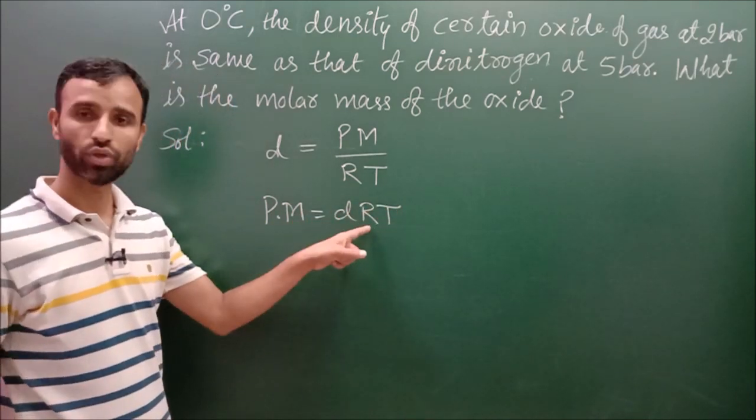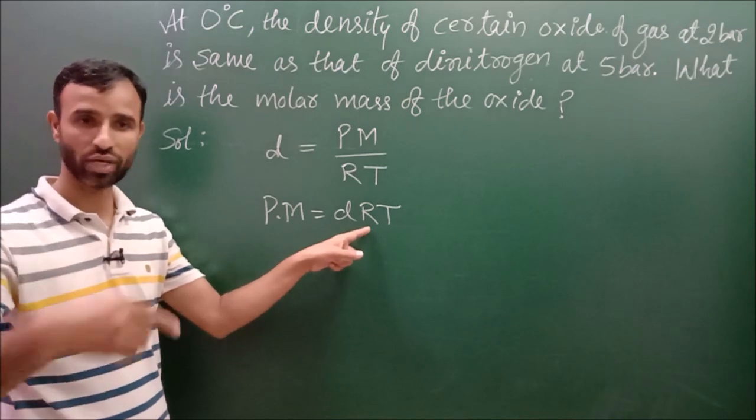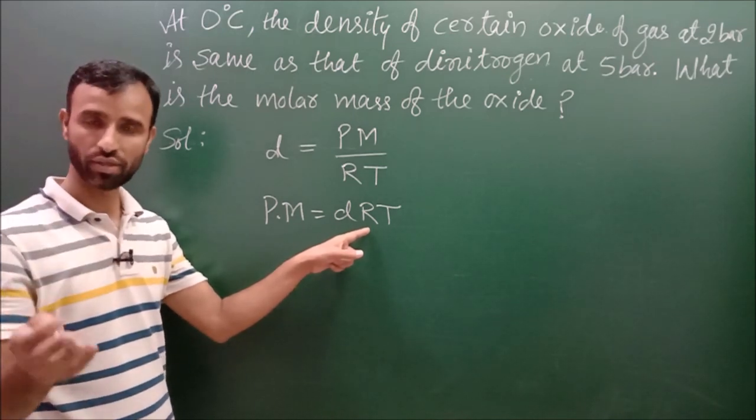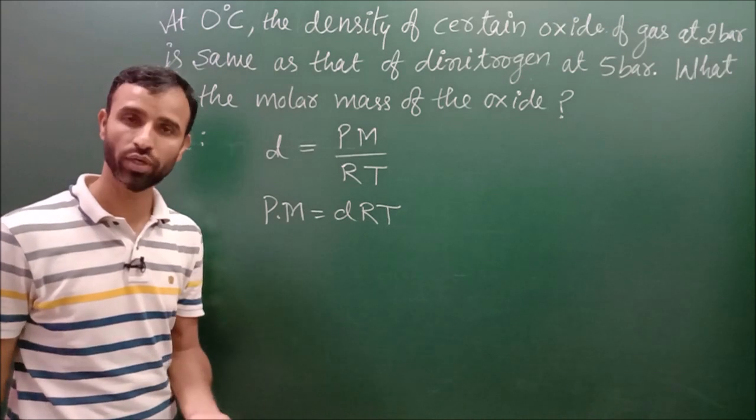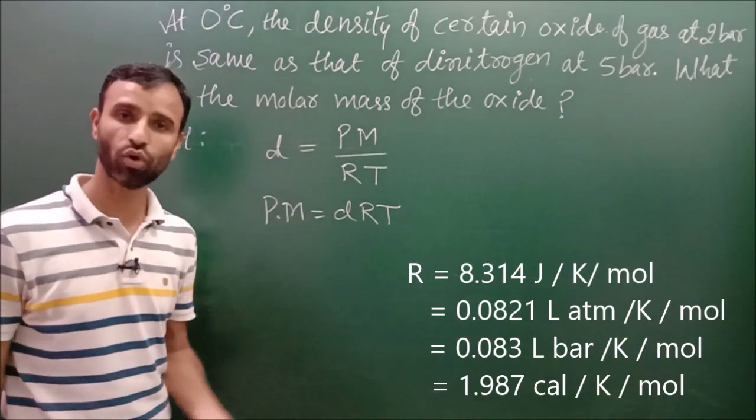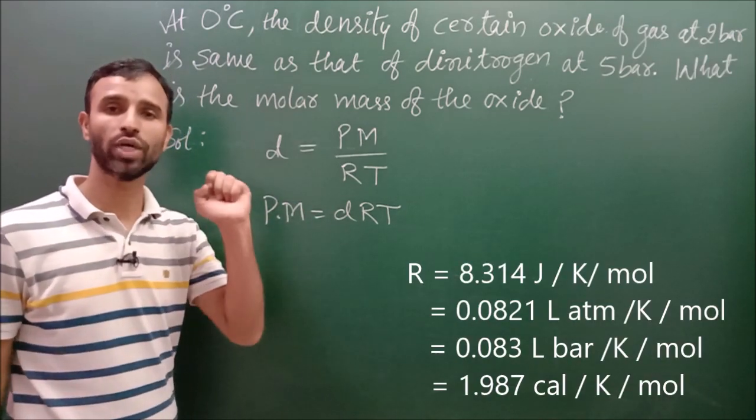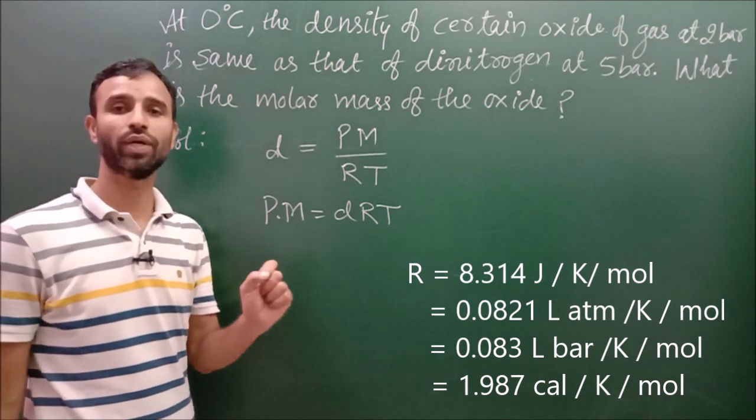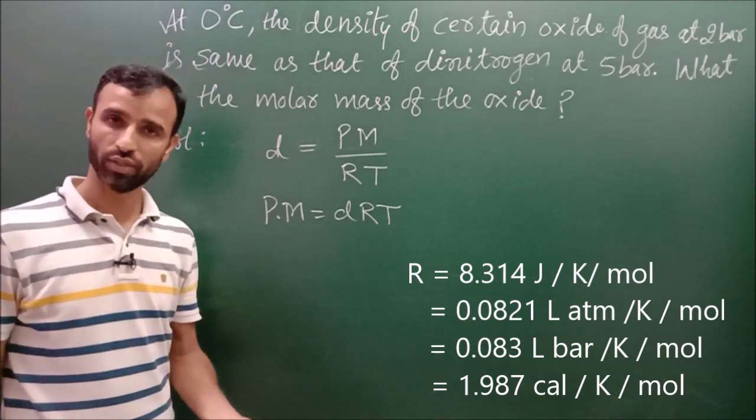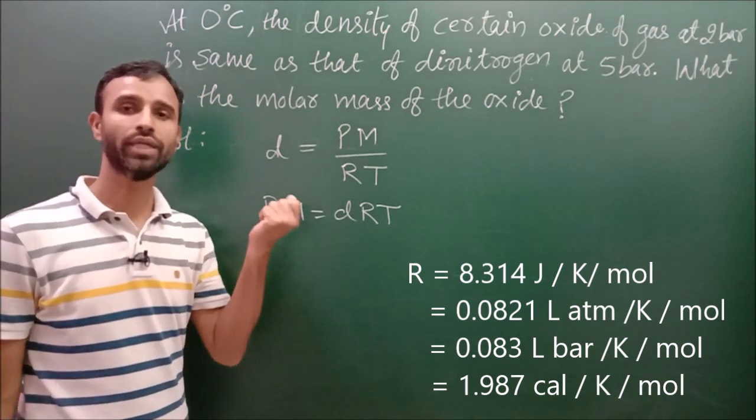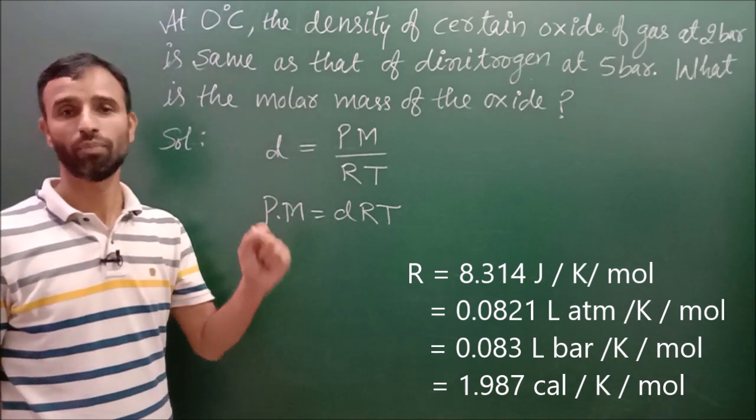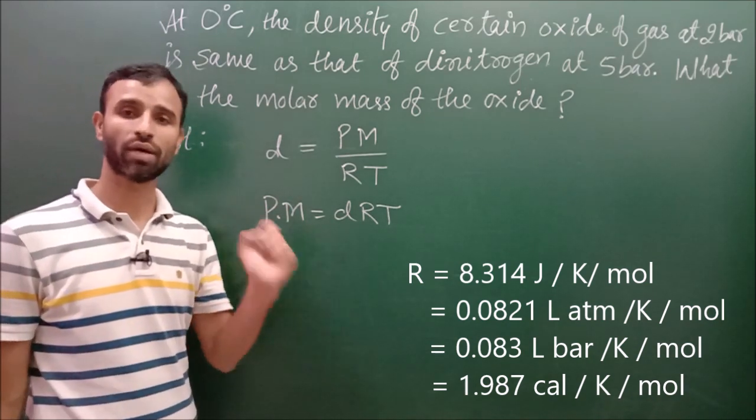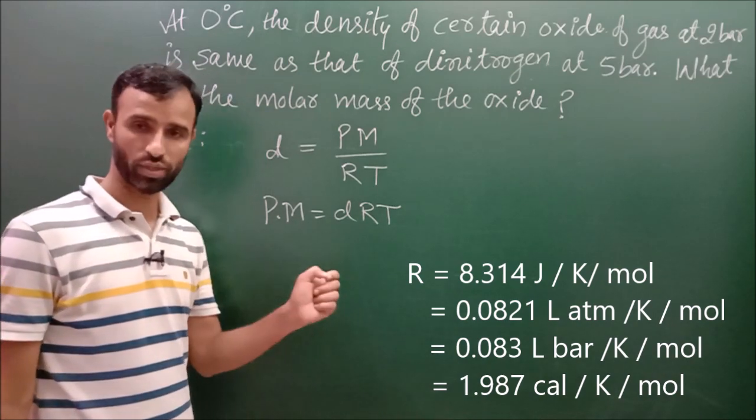R, you know, it is gas constant. Its values are different in different units. Like it is 8.314 joule per Kelvin per mole, it is equal to 0.0821 liter atmosphere per Kelvin per mole, 0.083 liter bar per Kelvin per mole, and 1.987 calories per Kelvin per mole.